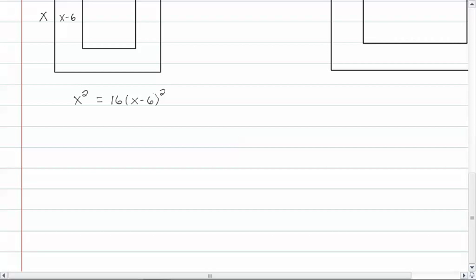Okay, now we want to expand this out. So we have x squared equal to sixteen times x squared minus twelve x plus thirty-six. Now we distribute here, we have x squared equal to sixteen x squared minus one ninety-two x plus five hundred and seventy-six.